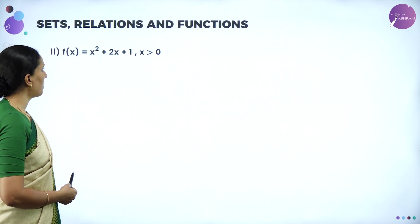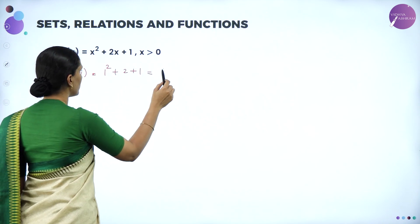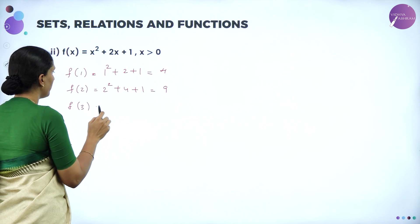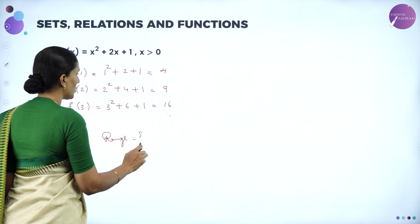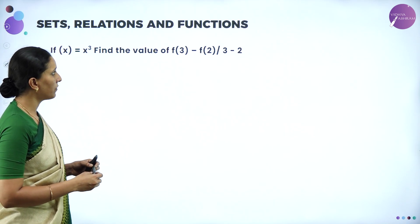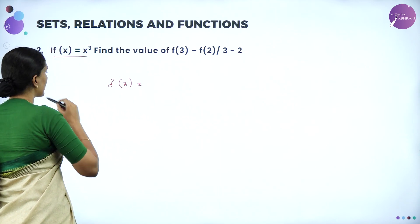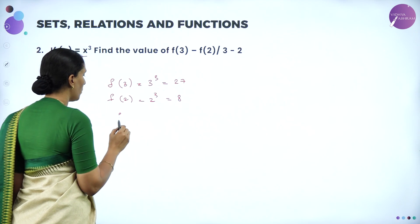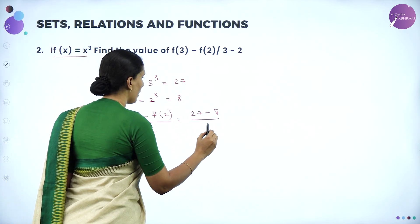If f(x) = x³, find the value of [f(3) − f(2)] / (3 − 2). First, f(3) = 3³ = 27 and f(2) = 2³ = 8. So [f(3) − f(2)] / (3 − 2) = (27 − 8) / 1 = 19.